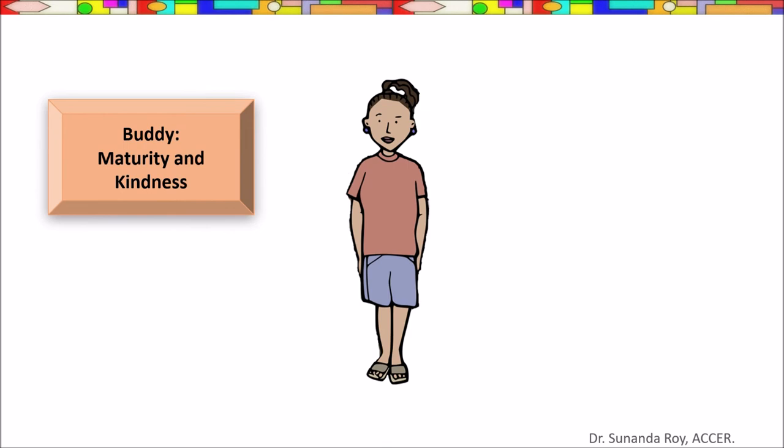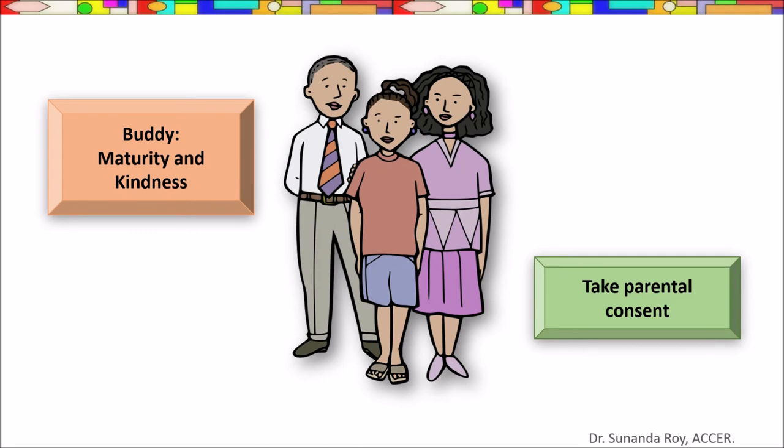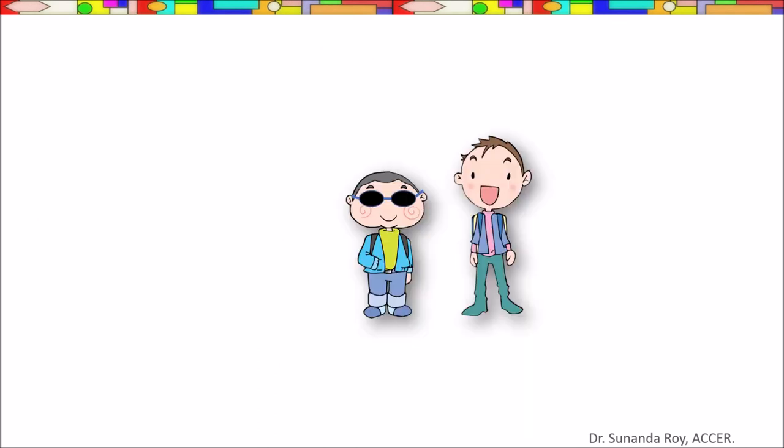The student who is selected as a buddy would be chosen for their maturity and kindness. Teachers should take parental consent from the students involved in the buddy system. While not every student with special needs will instantly begin to socialize or make friends, this approach will at least ensure that inclusion takes place and also that there will be a friendly pair of eyes when the teachers are not present.